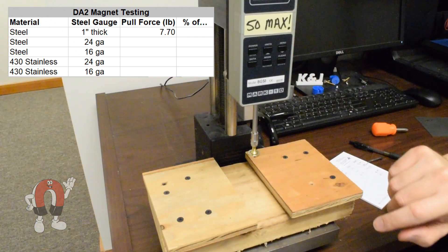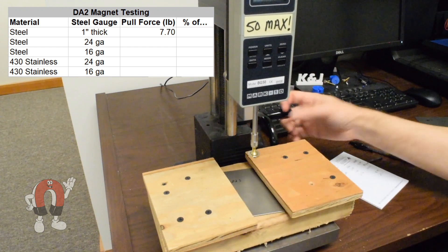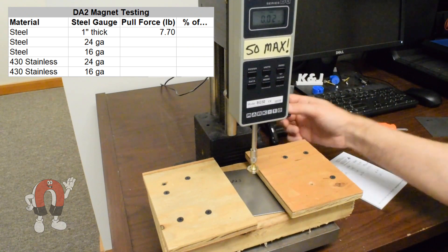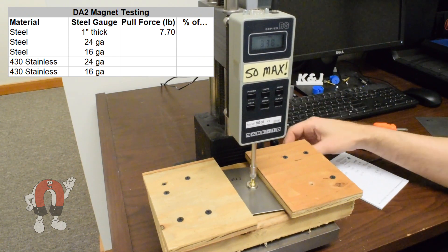If we stick the same magnet to a thinner piece of regular steel, we see less pull force. This thin 24 gauge sample measured just 3.7 pounds, quite a bit less.